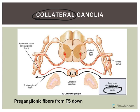Here you've got the lateral gray horns where the preganglionic neurons are. These axons travel out through the white ramus communicans and keep going until they reach these collateral ganglia.